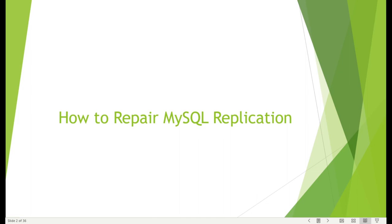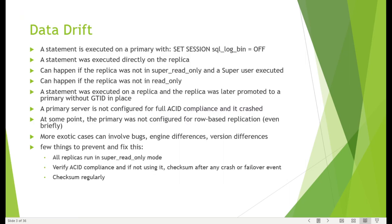We can either go for rebuilding the replication, skip some errors, or solve some errors and get the replication running again. In this section we will be covering only classic replication, and as we go more into GTID-based replication, we will do that separately.